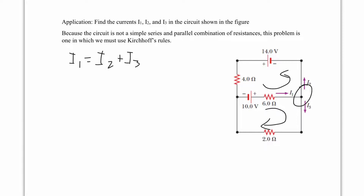Following the current through the first closed loop and setting voltages to zero: we get 10, subtract 6I1, add 14, subtract 4I2, equals zero. So 10 plus 14 minus 6I1 minus 4I2 equals 0.